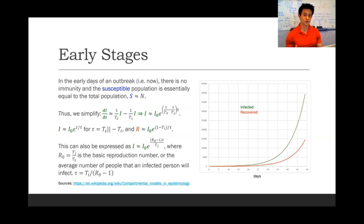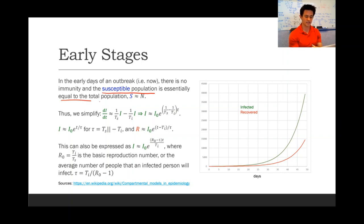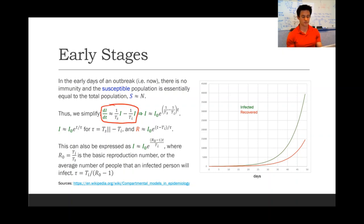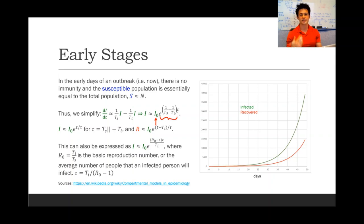Now let's have a closer look at what happens during the early stages of a pandemic — which is what's happening right now. In the early stages of a pandemic, nobody has immunity, and the susceptible population is essentially equal to the total population. As a result, we can simplify that first expression into a much simpler expression, which does have a clear closed-form analytical solution: the number of infected people is equal to how many people are infected right now times something that's exponential with time.